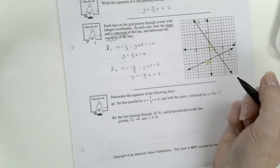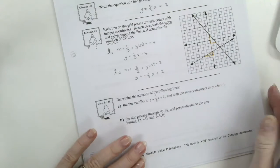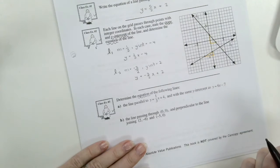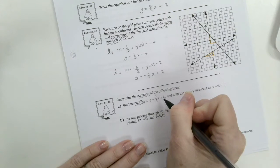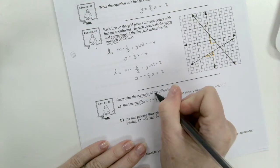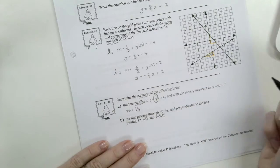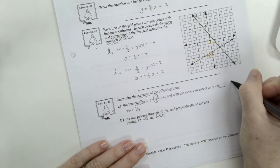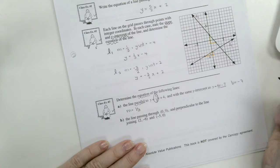Now it gets a little more entertaining. Example 3. Determine the equation of the following lines. A line parallel to y equals 1 third x plus 4. So we know if it's parallel, the slopes will be the same. So we'll have a slope of 1 third.